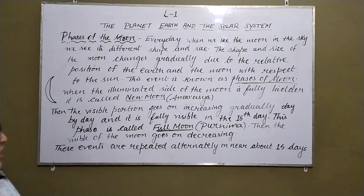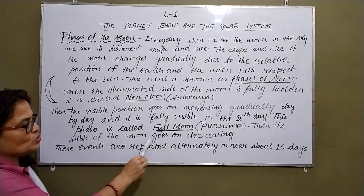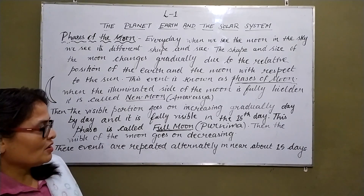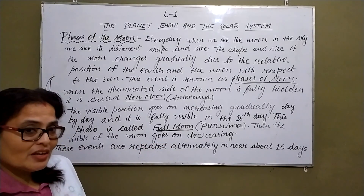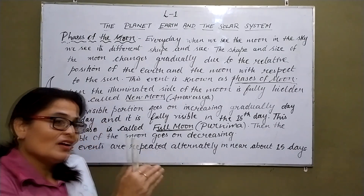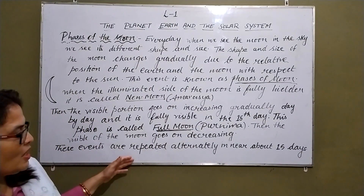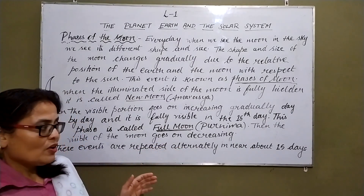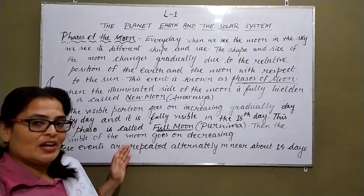Then the visible part of the moon goes on decreasing. The visible part of the moon when it was full moon was decreasing, and it started to come back to the new moon. These events are repeated alternately in about 15 days.